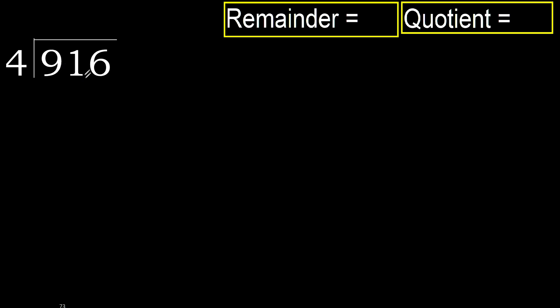916 divided by 4. 9 is not less, therefore with 9 — 4 multiplied by which number is nearest to 9 but not greater?